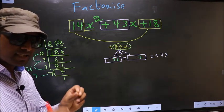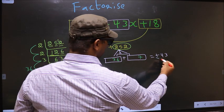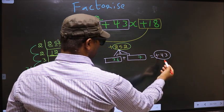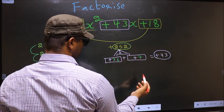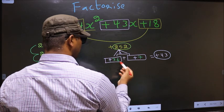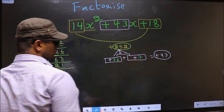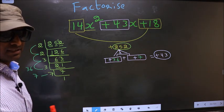Next, we should adjust the signs. What I mean is, over here we have +43. To get +43, we should put plus here and also here. +36 plus 7 is +43, +36 × +7 is +252. So, we have adjusted the signs.